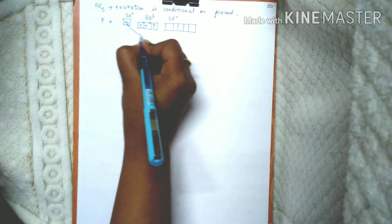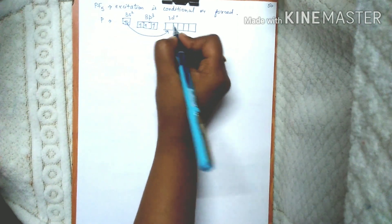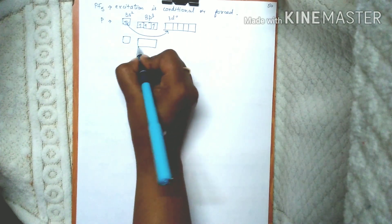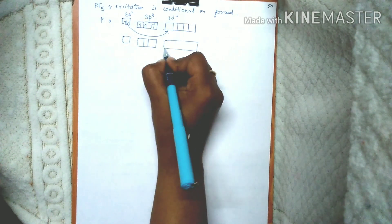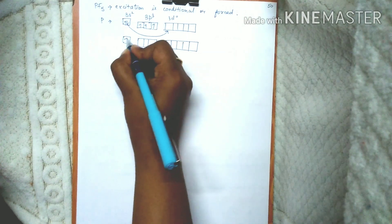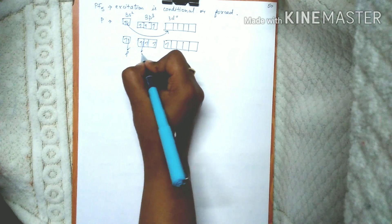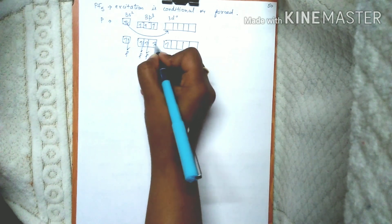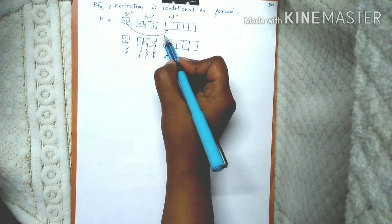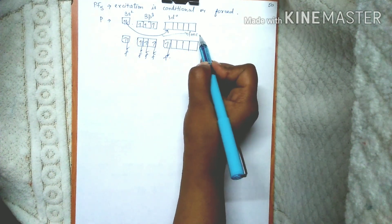In the case of PF5, the excitation is conditional or forced. Consider the valence shell: 3s2 3p3 3d0. One electron is excited and goes to the 3d orbital, and then five F atoms are attached. But the question is: why does this excitation take place? What is this forced excitation and what causes it? For that, charge contraction theory comes into the picture.